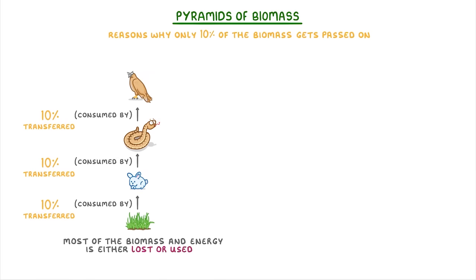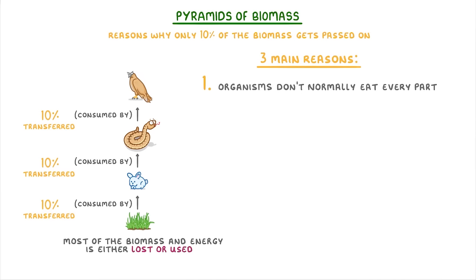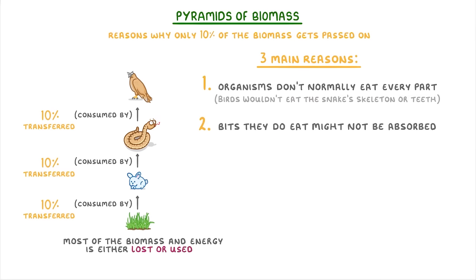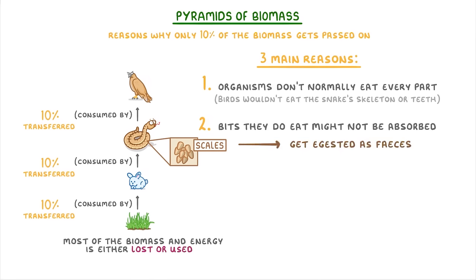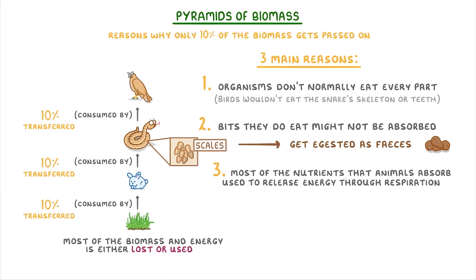There are three main reasons why only 10% of the biomass and energy gets passed on each time. The first is that organisms don't normally eat every single part of the organism they're consuming — for example, the hawks wouldn't eat the snake's skeleton or teeth. The second is that even the bits that they do eat might not be absorbed if they can't break them down properly, such as scales, so those bits just get excreted as feces. The most important reason is that most of the nutrients that animals do absorb are used to release energy through respiration rather than for growth.